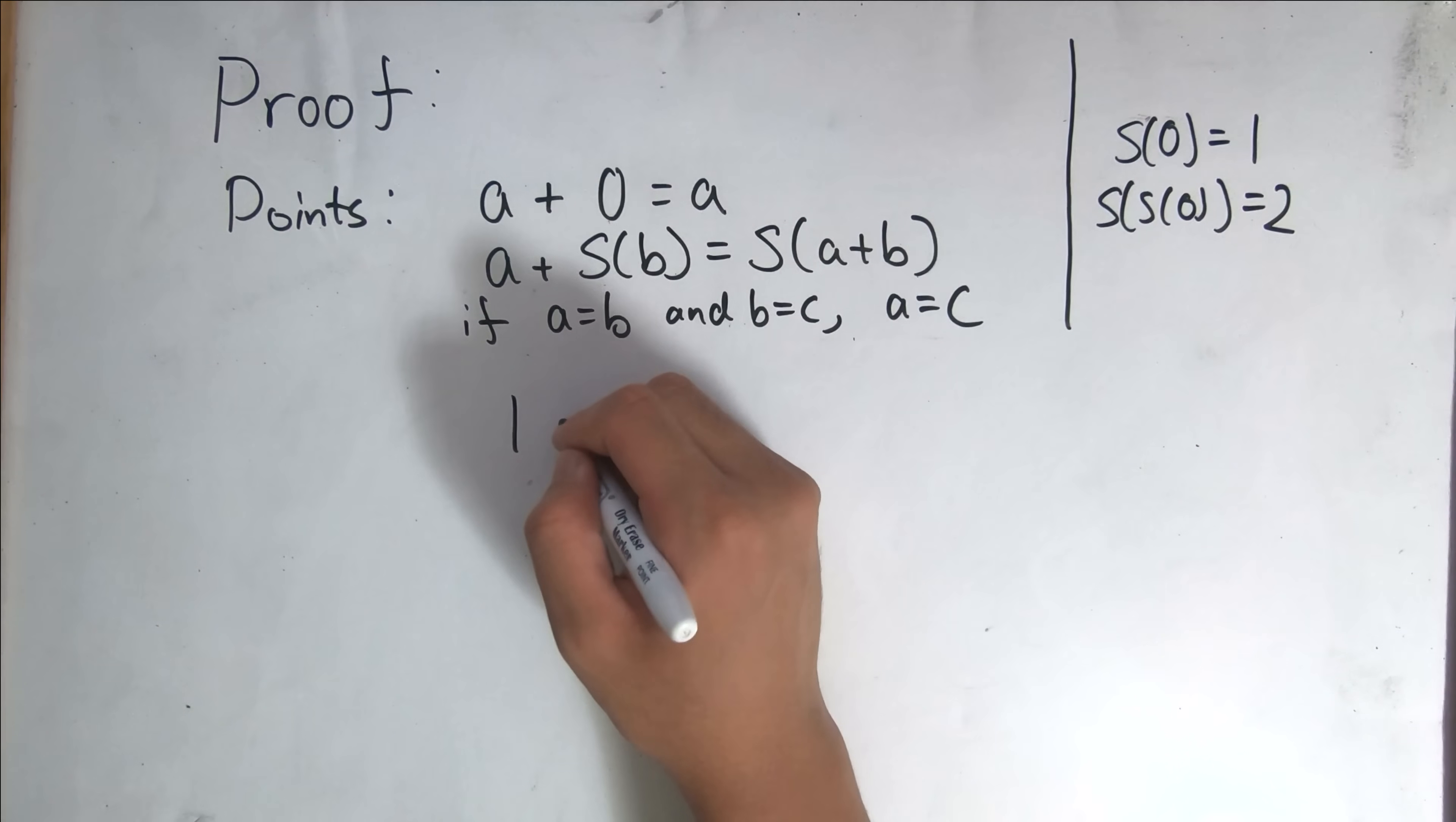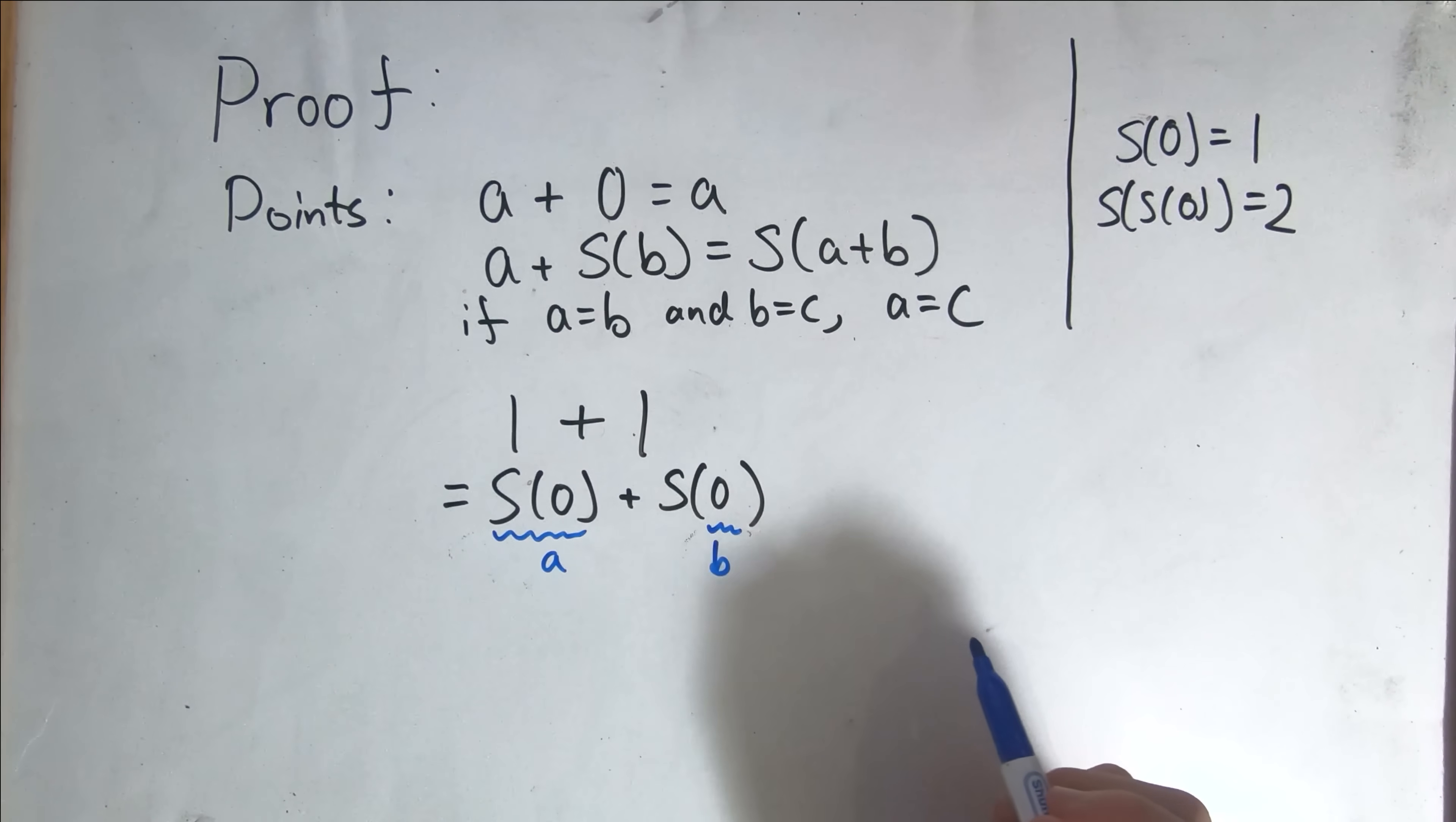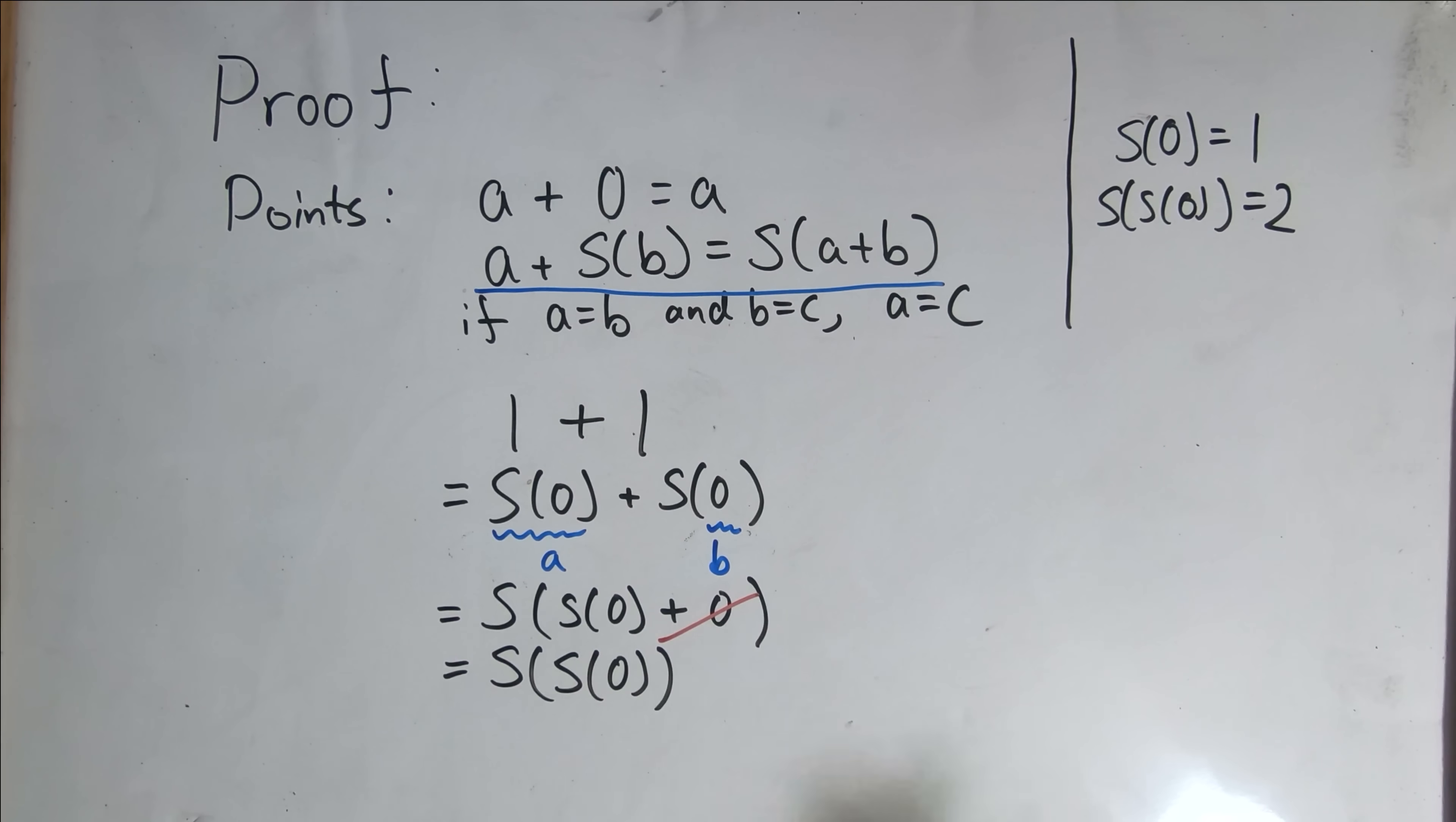Let's start with one plus one, and one is the successor of zero, so let's rewrite that as the successor of zero plus the successor of zero. Now let's consider the successor of zero as a, and this zero as b. So using this formula here, we get that this is equal to the successor of a, which is the successor of zero, plus b, which is zero. And using the fact that any a plus zero equals a, we can cancel this zero, leaving us with the successor of the successor of zero, which, if we refer to the definition, is equal to two.